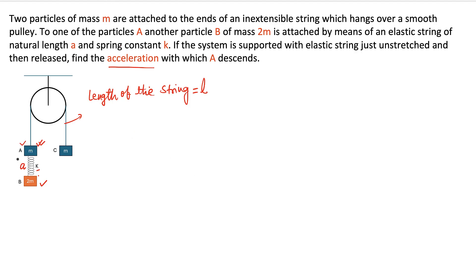Before starting to solve, think for 10–20 seconds about what is going on logically. Because the 2m mass is heavier, it will try to come down, pull the string, and apply tension on mass A. Since the overall mass on that side is more, the system will try to come down on the 2m side and A will go up. But after some time, 2m will also try to go up relatively, so the tension will decrease and the acceleration of A will also change. If SHM is going on in part of the system, all related variables will also undergo SHM.